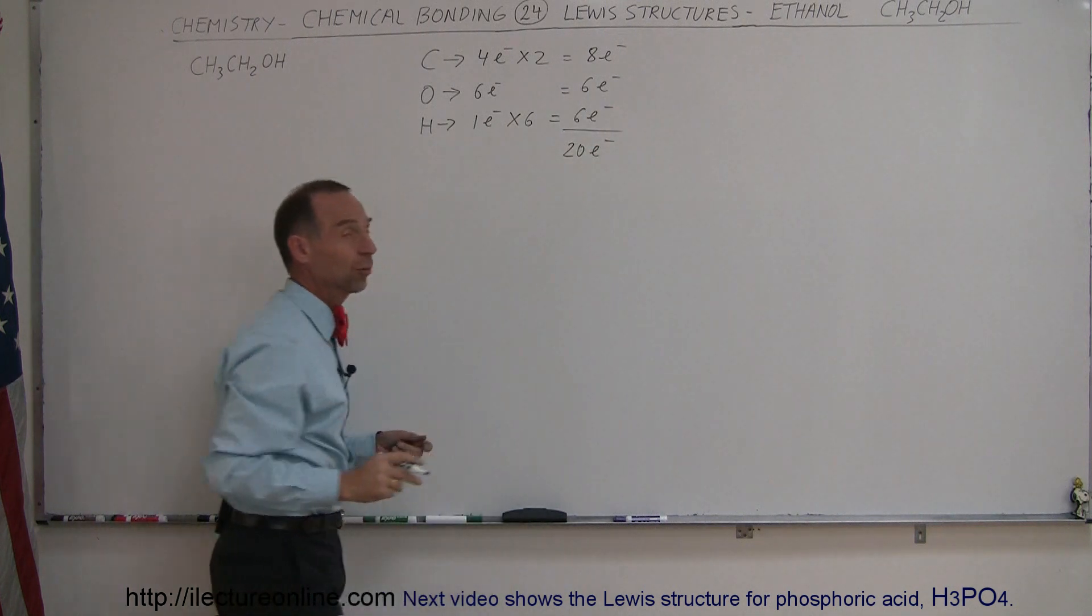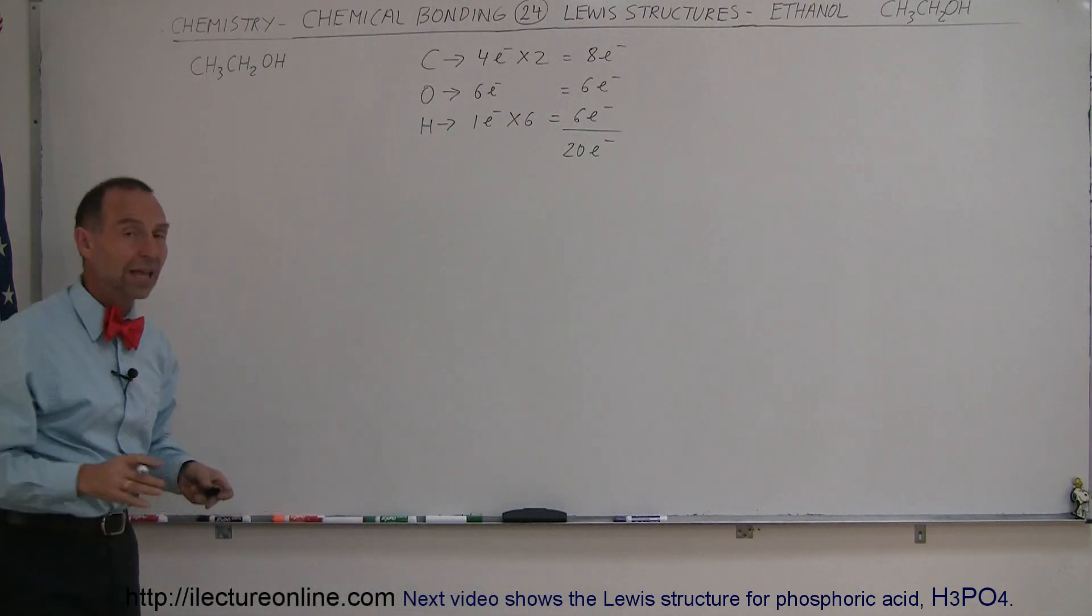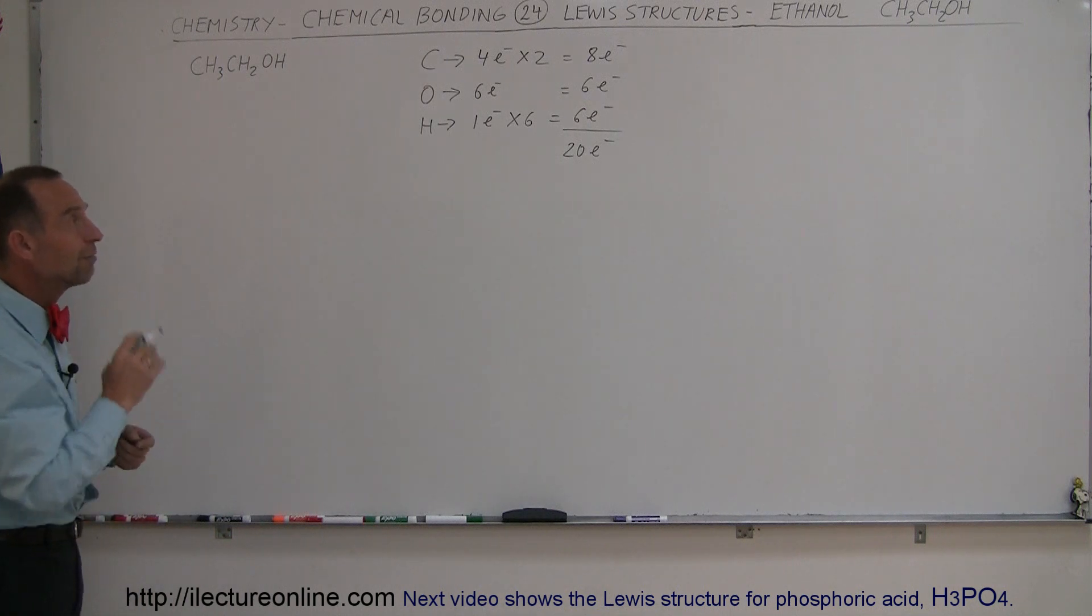So the total we have is 20 valence electrons. Whatever we draw should utilize those 20 valence electrons; otherwise it's not correct. Typically, we know that carbon-based molecules like this,